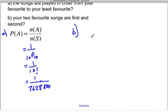So, B: the probability that it's going to play your two favorite songs first and second. Well, when we consider playing your two favorite songs first and second, that's a permutation of 2 choose 2. And I'll explain the significance of that in a second. And then the rest of the eight songs is going to be the permutation of 8 choose 8.